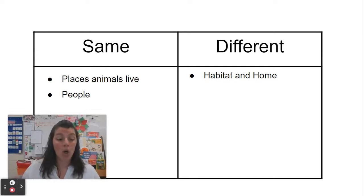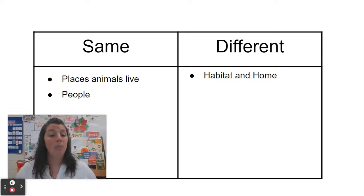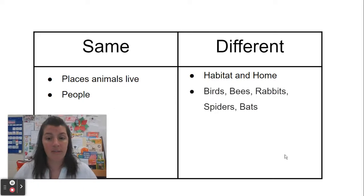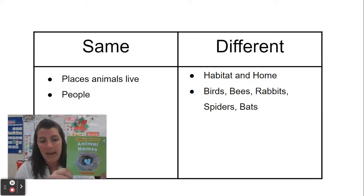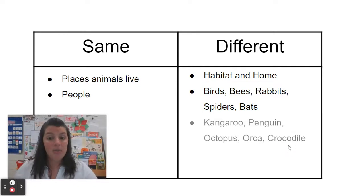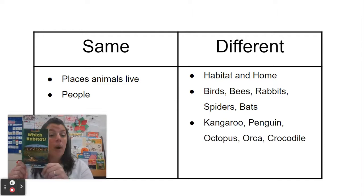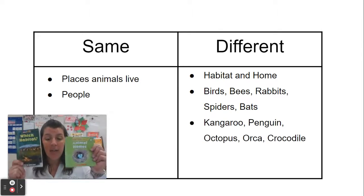Another thing that was different was the animals they showed. This book showed birds, bees, rabbits, spiders, and bats. This book showed a kangaroo, a penguin, octopus, orca, and crocodile. So, they showed different animals.